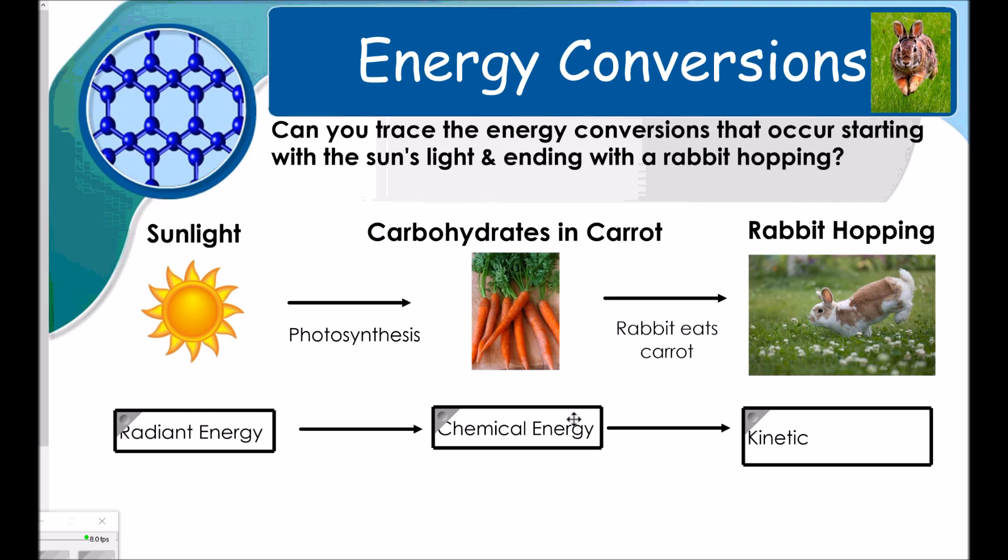So we're seeing radiant energy turn into chemical energy turn into kinetic energy. The next one in your note says, What about the energy conversions that occur starting with the sun's light and ending with a car driving down the road? I want you to try that one on your own.